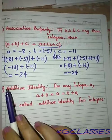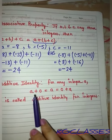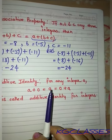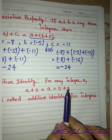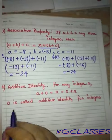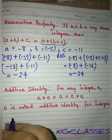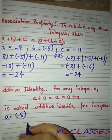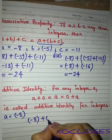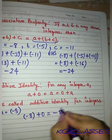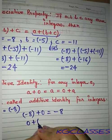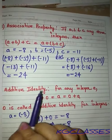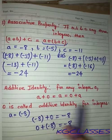The next property is additive identity. For any integer a, if we add 0 to it, we get the integer itself. For example, if we have minus 8 and we add 0, we get minus 8 itself. So 0 is called the additive identity.